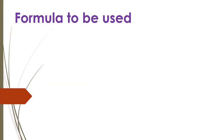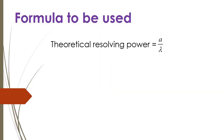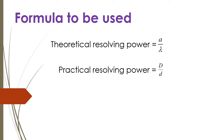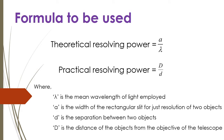The formulas used in the experiment are: theoretical resolving power is equal to a divided by lambda, and practical resolving power is equal to capital D divided by small d, where lambda is the mean wavelength of the light employed, a is the width of the rectangular slit for just resolution of two objects, small d is the separation between two objects, and capital D is the distance of the objects from the objective of the telescope.